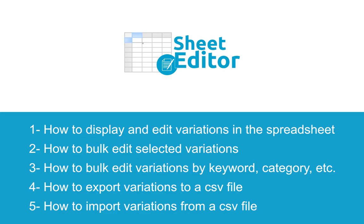In this tutorial, we'll see how to: 1. Display and edit variations in the spreadsheet. 2. Bulk edit selected variations. 3. Bulk edit variations by category, keyword, attribute, etc.